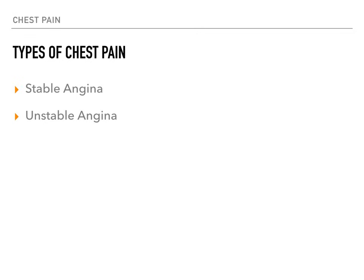Stable angina is chest pain that is worse with exertion and gets better at rest. Unstable angina is chest pain that occurs at rest — and they're very different. Stable angina classically progresses to unstable angina as coronary artery disease gets worse. The workup and the medications you discharge the patient with are really dependent on the type of chest pain they're having.